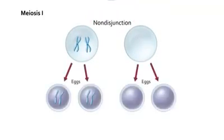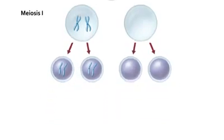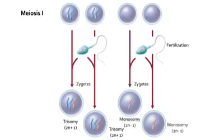One daughter cell retains both replicated chromosomes, while the other daughter cell lacks that chromosome. When a haploid sperm fertilizes an egg with an extra chromosome, trisomy occurs. When a sperm cell fertilizes an egg that lacks a chromosome, monosomy results.